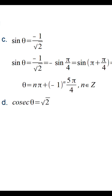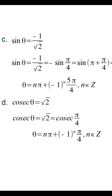Cosec theta is equal to root 2. We know that cosec pi by 4 is equal to root 2. So substituting pi by 4 in the general solution formula, we get theta is equal to n pi plus minus 1 raise to n, pi by 4.